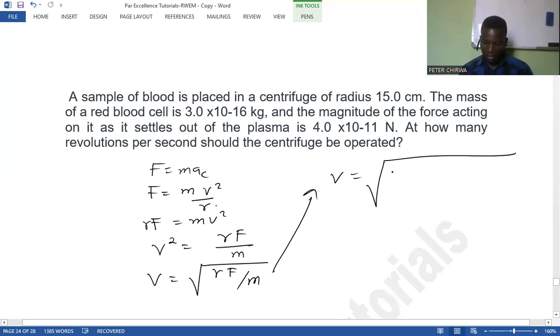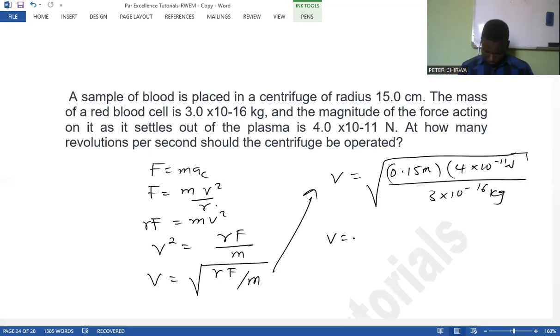So the radius 15 centimeter is basically 0.15 meters. And we are multiplying by 4 times 10 to the power negative 11 newton, right? So it's going to be over the mass, which is 3 times 10 to the power negative 16 kg. So what would be the speed? So if we get 141.4 meters per second, right? So now this we've gotten is the tangential speed.